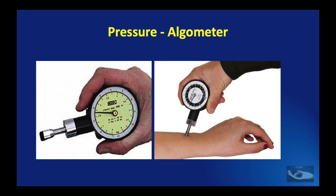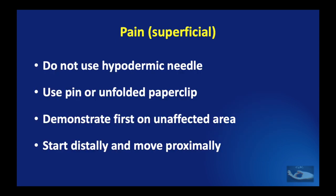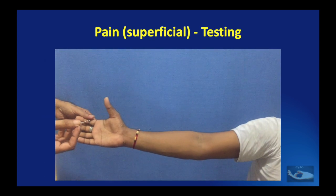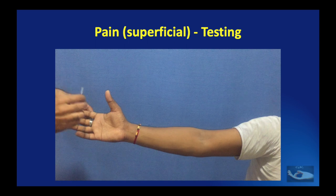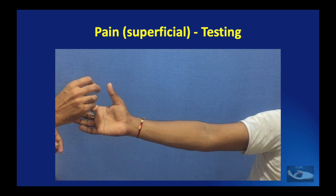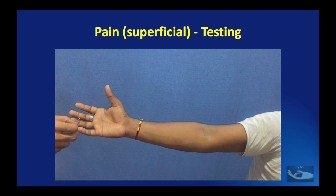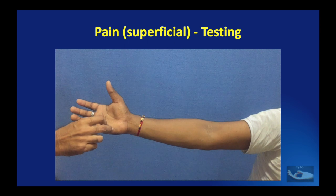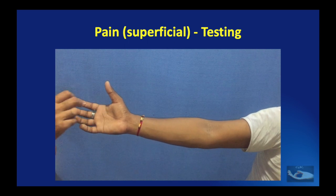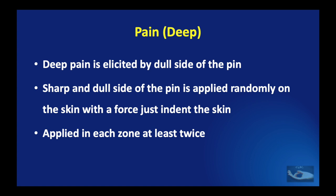Pressure or deep touch is measured with an algometer. Pain measurement is of two types: superficial and deep. A pin or unfolded paper clip should be used — not a hypodermic needle. The test is demonstrated first on the unaffected area, then starts distally and moves proximally. Superficial pain is assessed using an opened-out paper clip over the main areas — thumb, index finger, little finger, and palm. Deep pain is elicited by applying the dull side of the pin with just enough force to indent the skin, applied at least twice per zone.